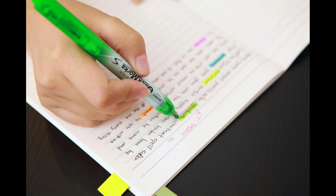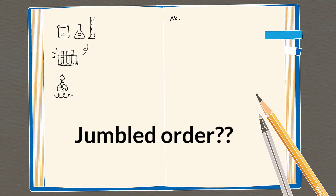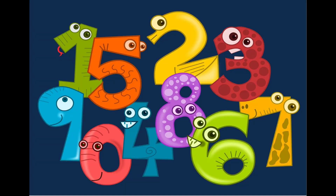Many people also have a doubt about whether answers written in jumbled order are okay. Try to write all answers in order. But if you're not confident about a VSAQs question and are confident about long answers, then first write the long answers, then short answers, and lastly VSAQs. Shuffling sections is fine, but try to keep the answers within each section in order.